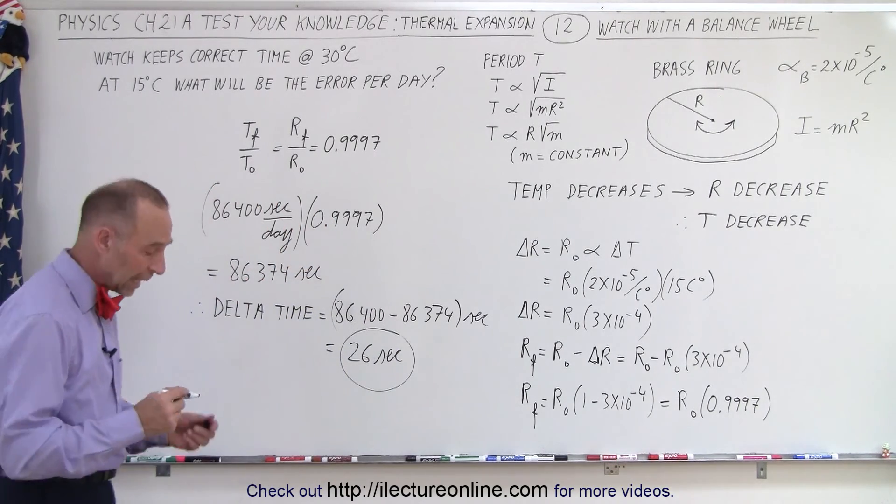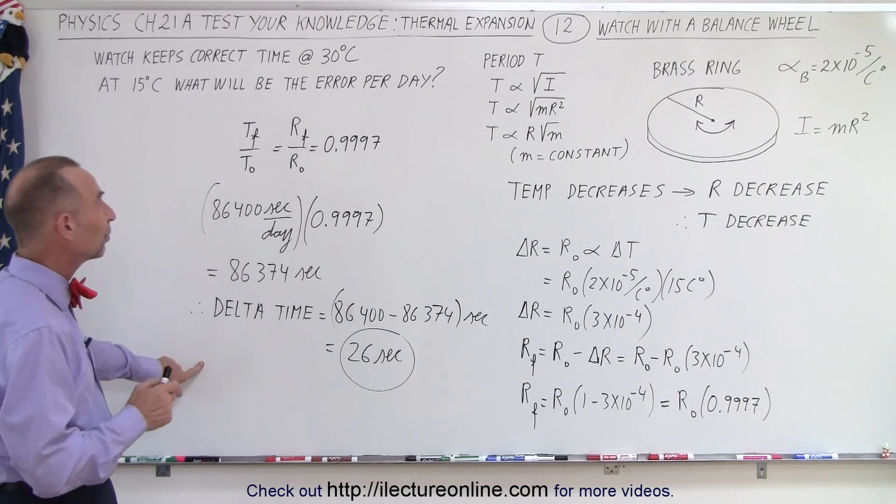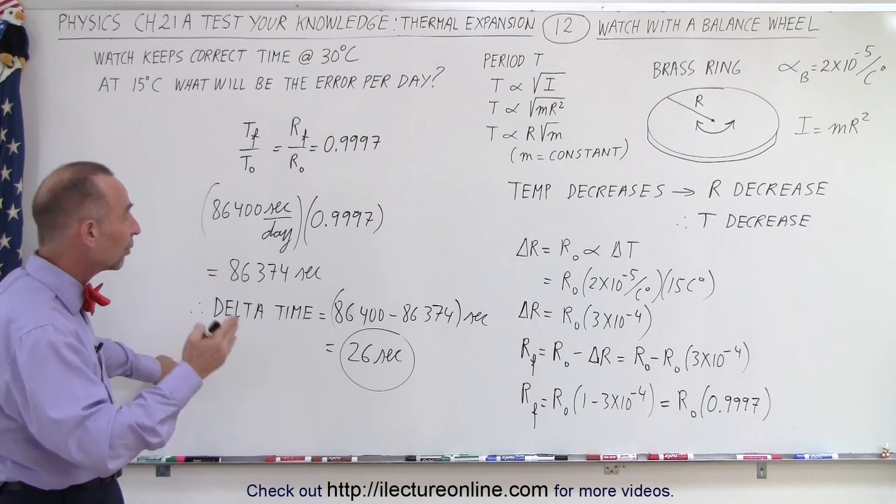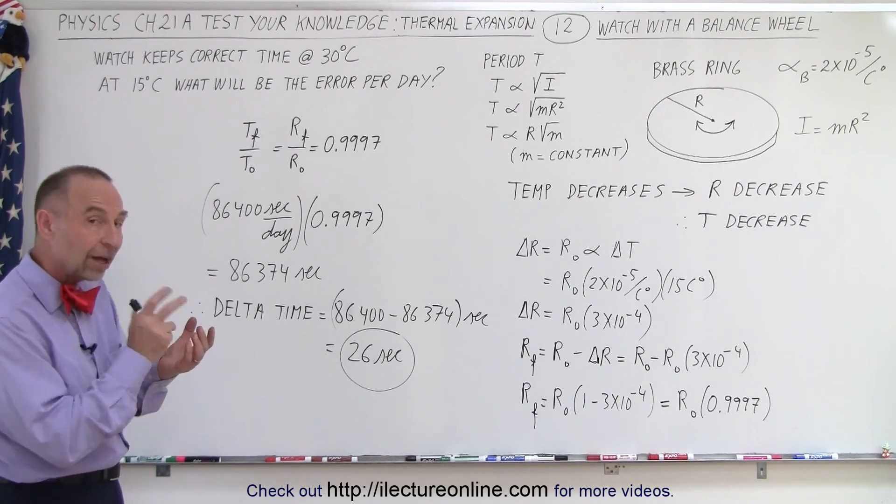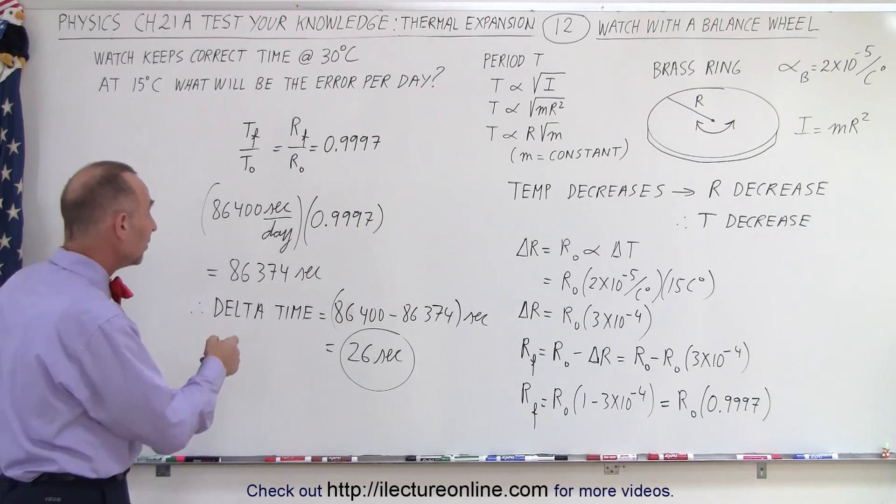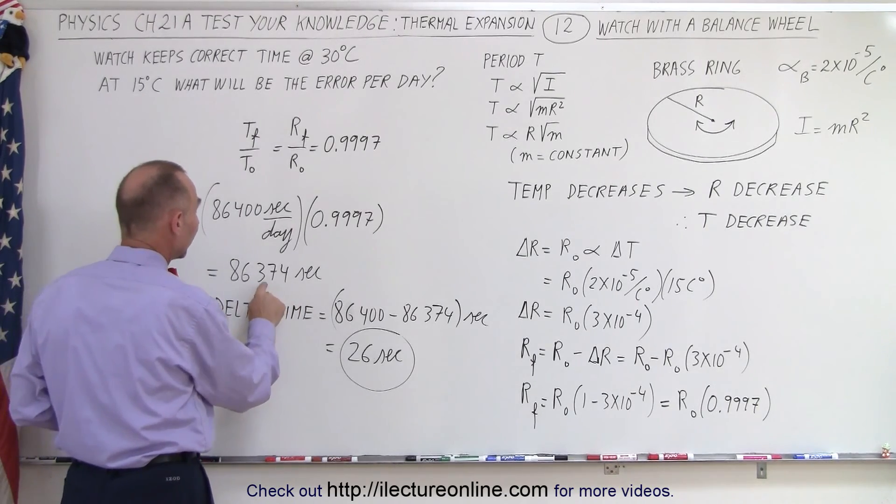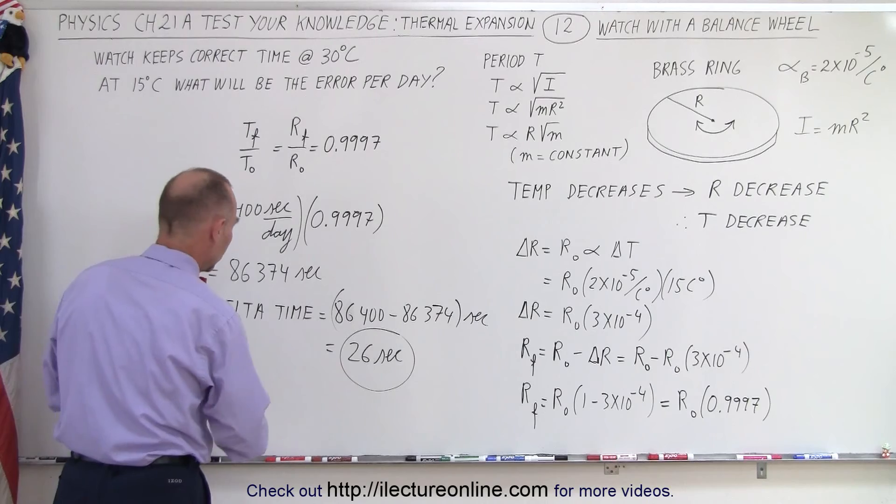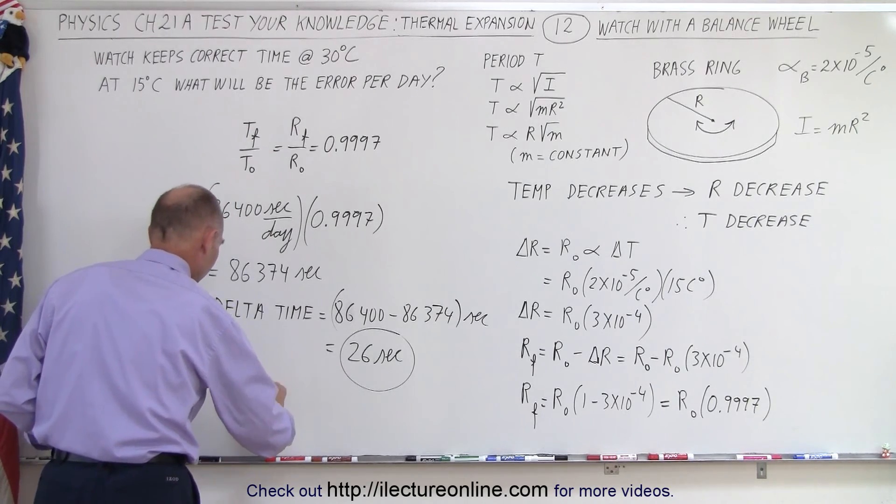So in other words, the watch would run in error 26 seconds per day. But the question now is, is it ahead or behind? Notice since the oscillation is faster, that means that a day on the watch will be this many seconds. So the watch will be 26 seconds ahead.